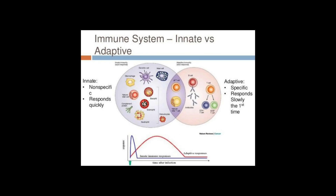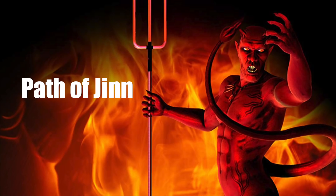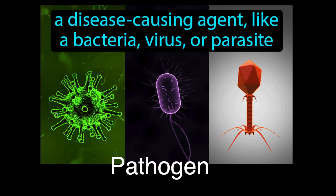It consists of two divisions. We have the innate immune system and we have the adaptive immune system. These two groups of soldiers have different duties but the same purpose, and that sole purpose is to protect you from pathogens.